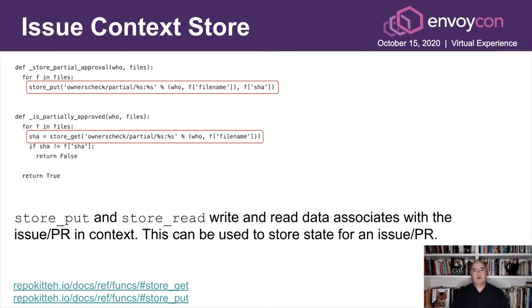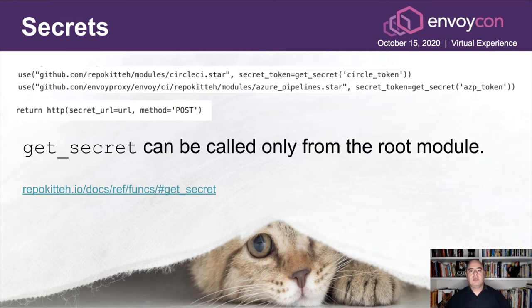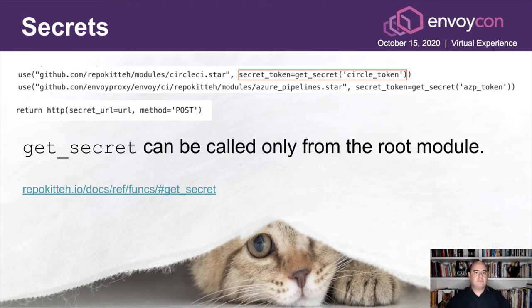RepoKitten allows for state to be stored for an issue or PR. This is useful when state needs to be stored for use later. For example, in the excerpt from RepoKitten's owner check module, we actually store who approved which paths in a PR. This allows later on to see if all relevant paths were approved and by whom. You can supply secrets to a module — we are using the getSecret function to fetch a pre-registered secret supplied using the RepoKitten UI. The getSecret can be called only in the root module, repokitten.star. We can also specify a secret URL to HTTP. When any parameter begins with the word secret underscore, it will not be seen in the traces and will not leak in RepoKitten debug information.